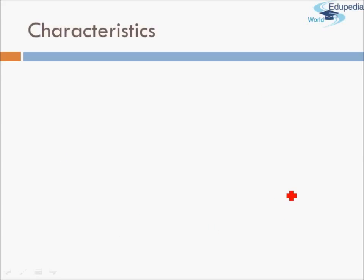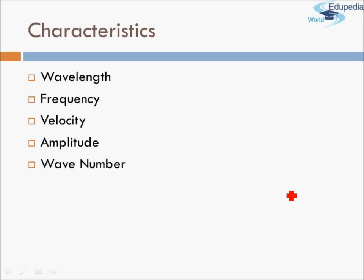Some of the characteristics of electromagnetic waves that we need to cover in our syllabus are wavelength, frequency, velocity, amplitude, and wave number. We'll study their definitions, notations, and calculations in the next session. Using these terms we can fully define a specific kind of electromagnetic wave, which is why they are called its characteristics.